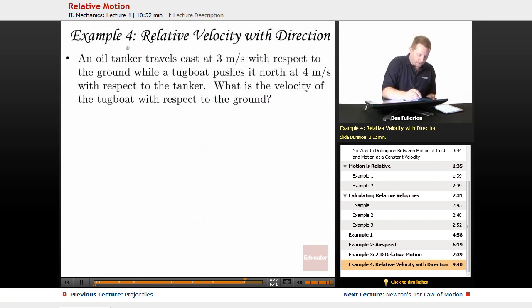An oil tanker, let's call it T for tanker, travels east at 3 meters per second with respect to the ground, while a tugboat B pushes it north at 4 meters per second with respect to the tanker. Find the velocity of the tugboat with respect to the ground.